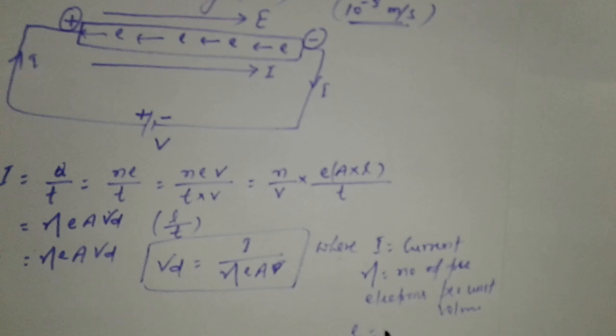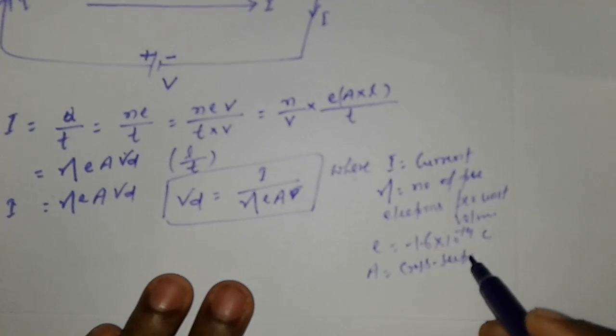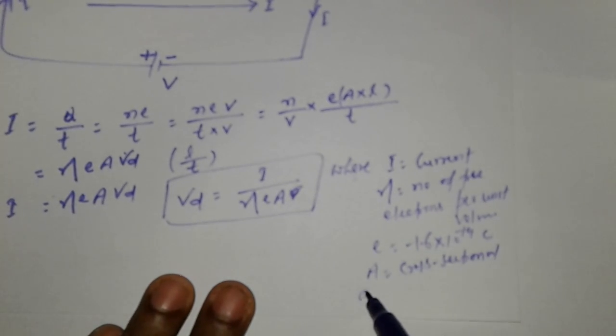e is charge on electron, minus 1.6 into 10 to the power minus 19 coulomb, and A is cross sectional area of the wire.